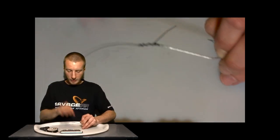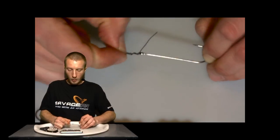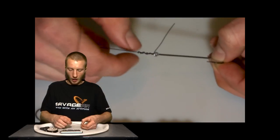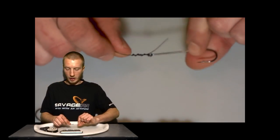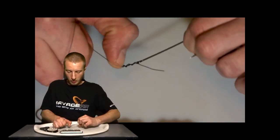To get it to bed down properly. With a thinner line, obviously because there's less friction, it will tighten down a lot easier. But today is 20 pound amnesia, so you've got to help it out.